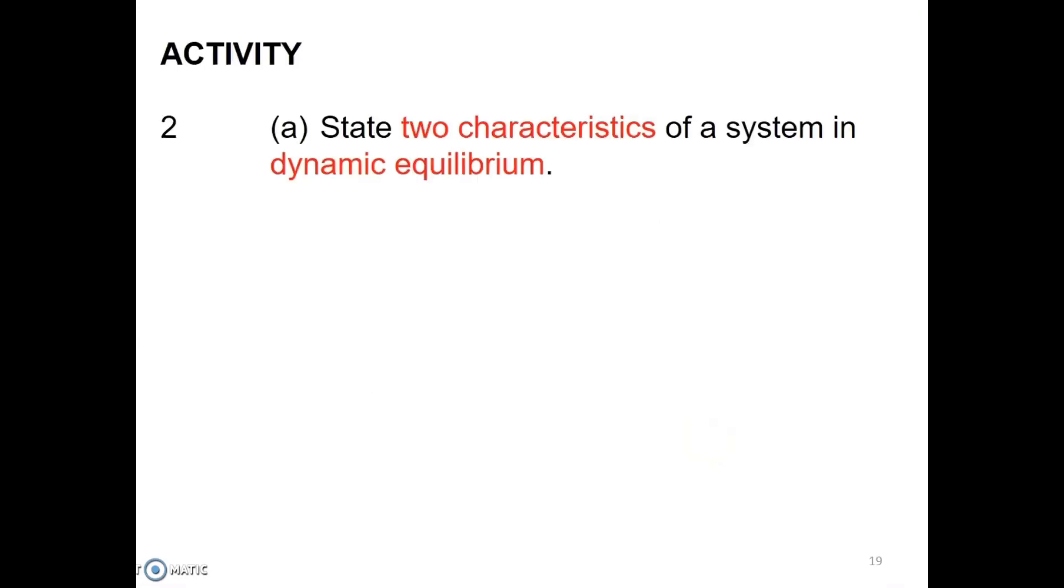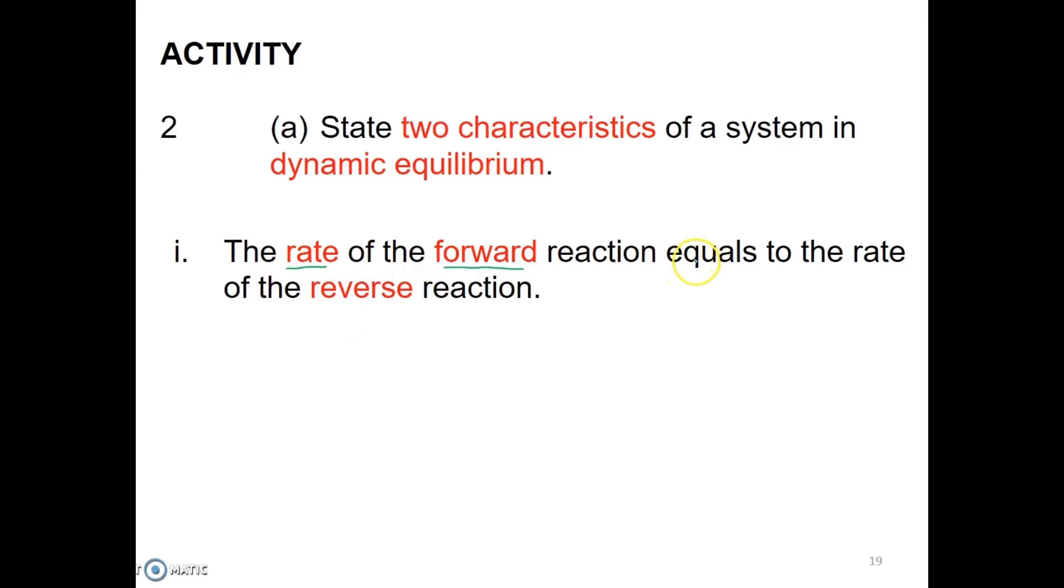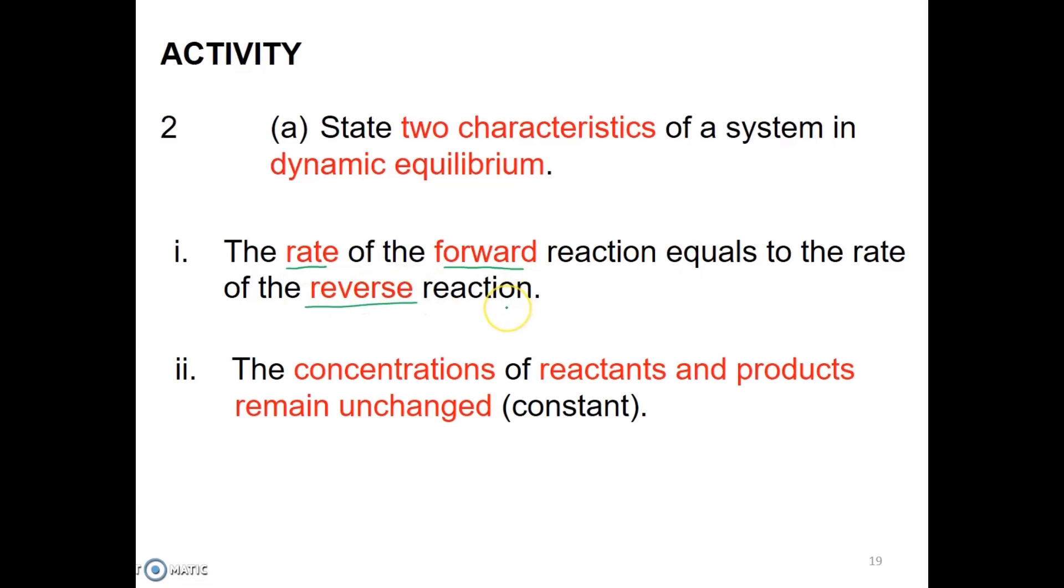Question number 2A, state two characteristics of a system in dynamic equilibrium. The two important characteristics of a system in equilibrium are: the rate of forward reaction must equal the rate of reverse reaction. Second, at dynamic equilibrium, the concentrations of reactant and products remain unchanged or become constant. For this, you should get two marks.